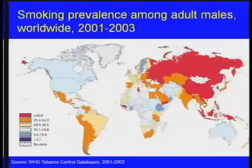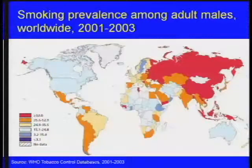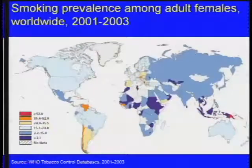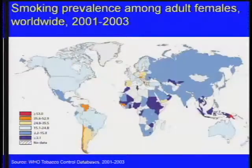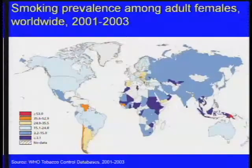The map of smoking prevalence among adult men shows very high rates in Eastern Europe, the former Soviet Union, and among men in China. For women, the countries with the highest rates are North America, much of Western Europe, Australia, and part of South America.